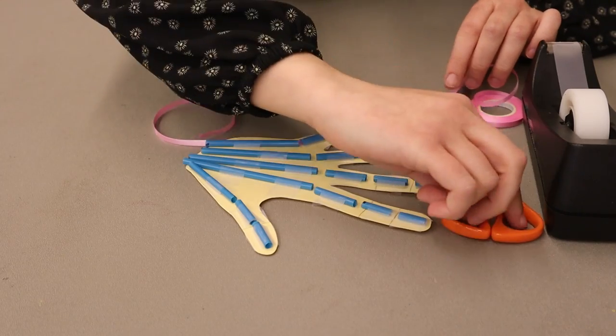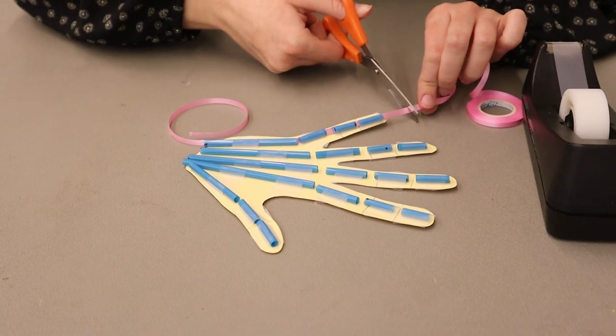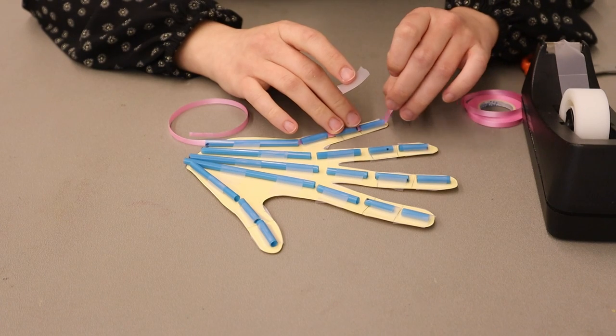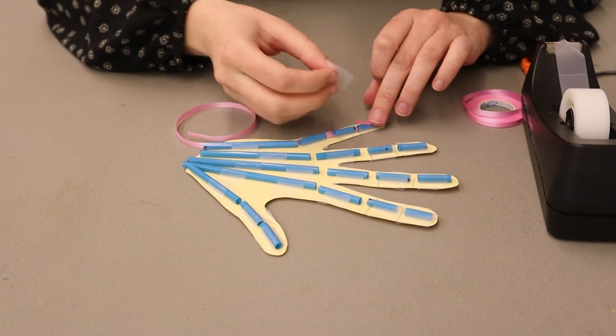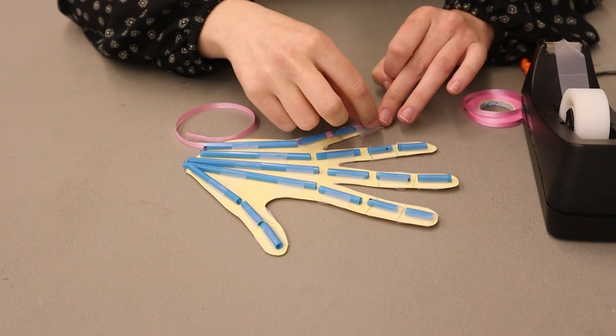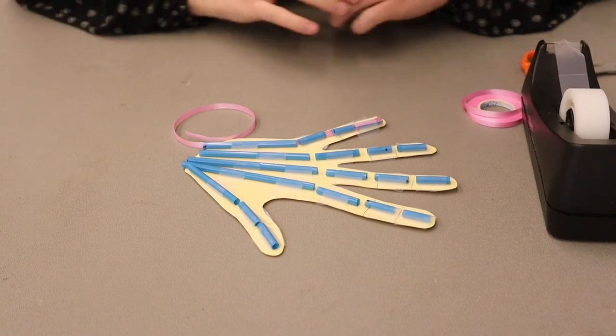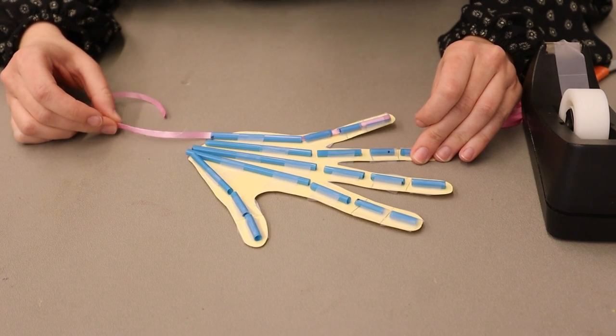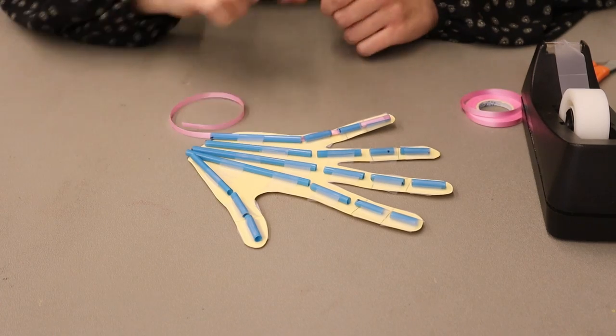Once you've threaded your ribbon through the straws, we are going to cut the end, grab some tape, flip over our ribbon, and tape it into place. Just like that. And as you can see, now our finger can move. We are going to repeat this with each finger.